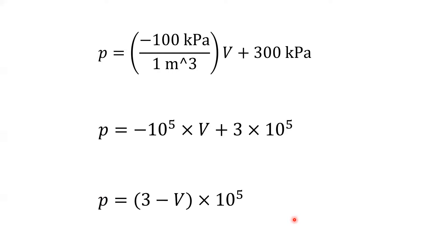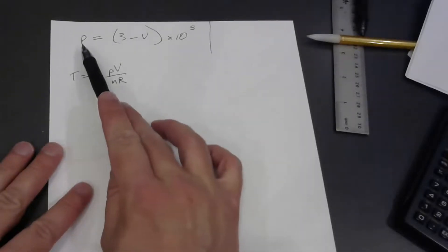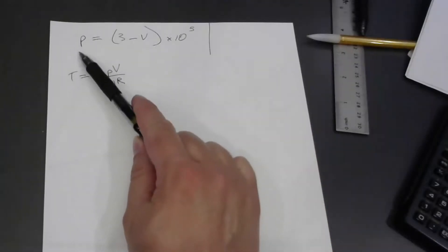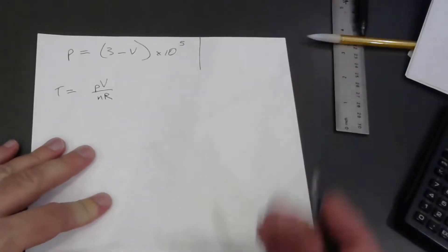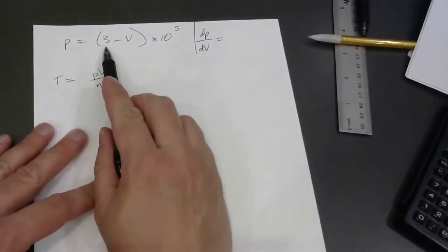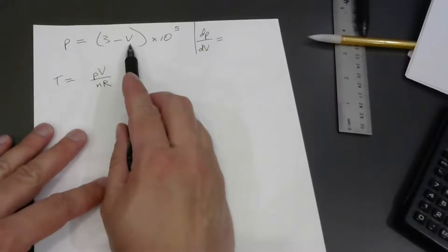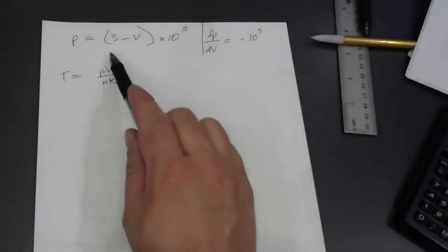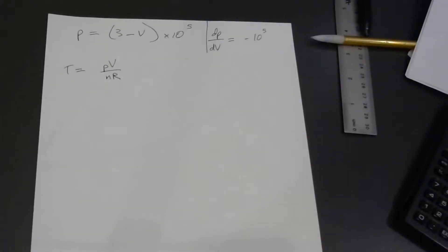This equation is specific to this problem's trajectory. There's another constraint — the ideal gas law. But now we have a further relationship between P and V for this straight-line path. Going back to the handwritten notes: the top line is P in terms of V for this trajectory. The derivative of pressure with respect to volume along this trajectory is simply negative 10 to the fifth — just a constant — since the derivative of V with respect to V is one and the constant term vanishes.